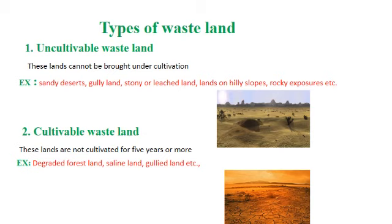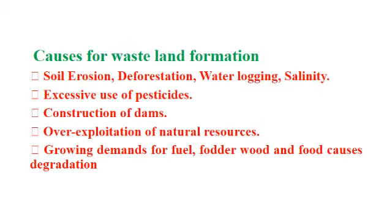Cultivable wasteland refers to land that can be brought under cultivation but has not been used for more than five years. Examples include degraded forest land, waterlogged land, and saline lands.